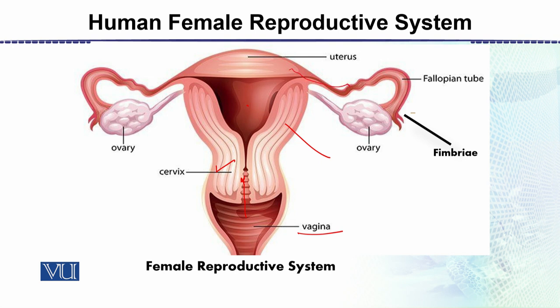From the uterus, there extend tubes called the Fallopian tubes. These tubes terminate in structures that are just like tentacles — finger-like structures called fimbriae — which move to draw the egg into the fallopian tube.